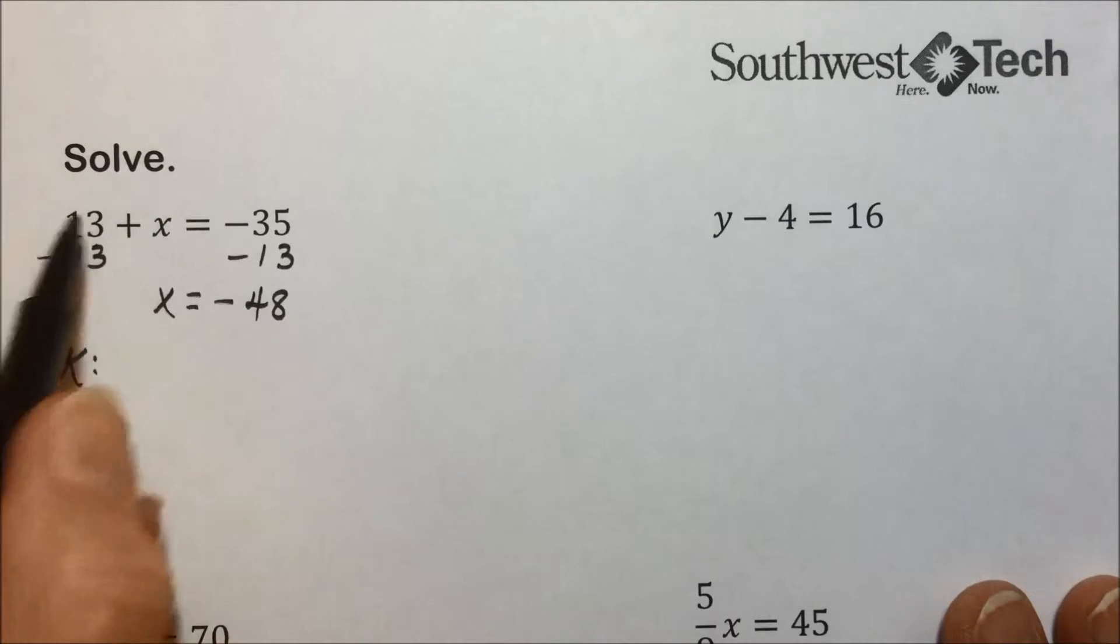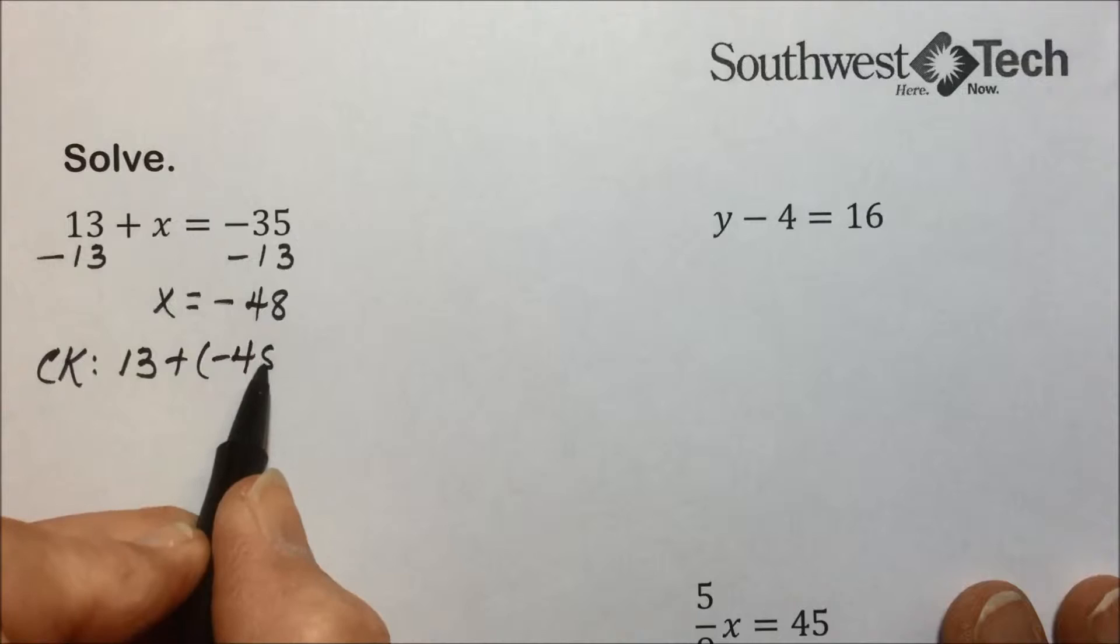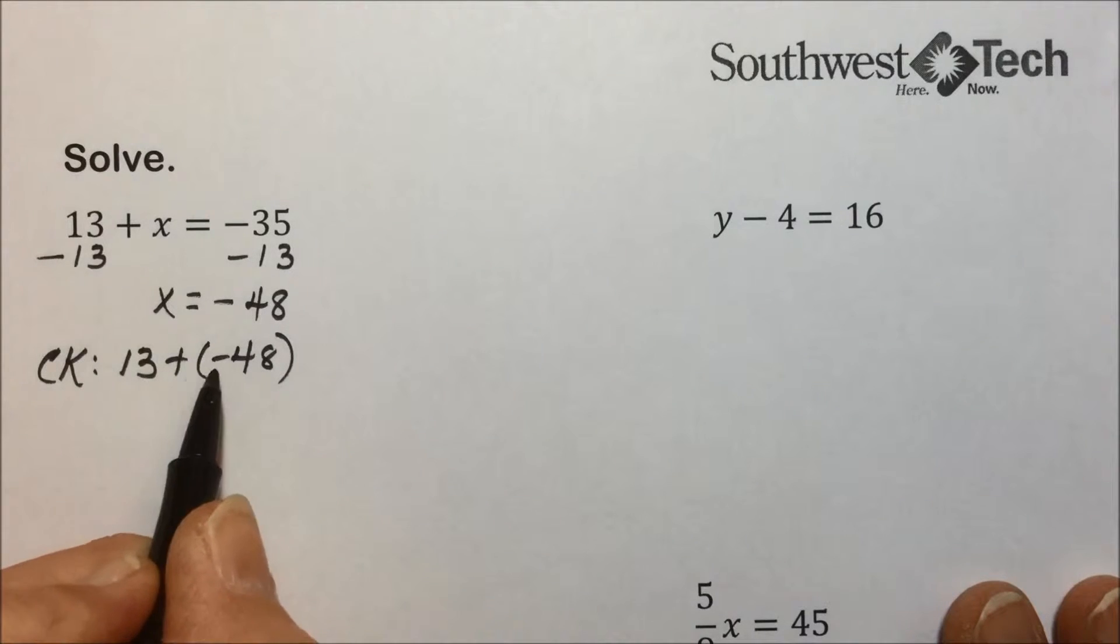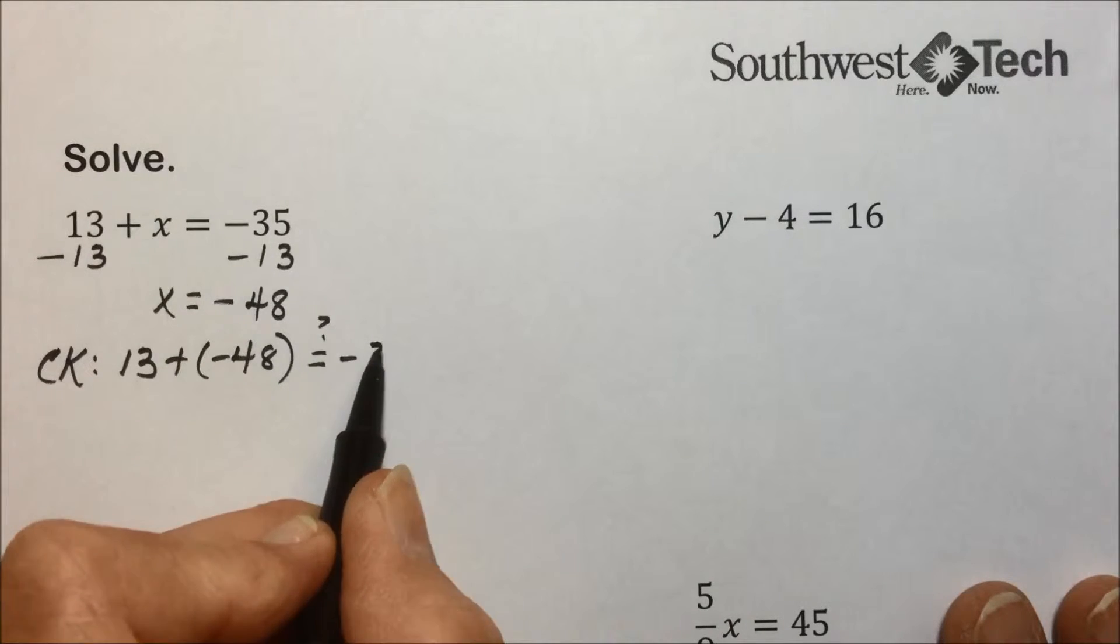It's always a good idea to check to make sure that your answer is correct. So we would replace the variable with the value that we got and see if 13 plus negative 48 does in fact give us a negative 35, and that is the case.